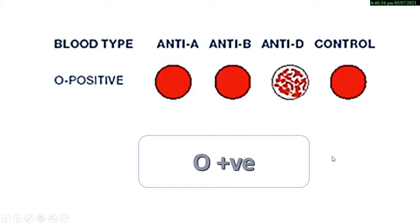After one to two minutes we can read the results. There is no agglutination on slides A and B. We can now see agglutination on anti-serum D. Since there is only agglutination on anti-D, the blood group is O positive. Thank you dear learners for watching the video.